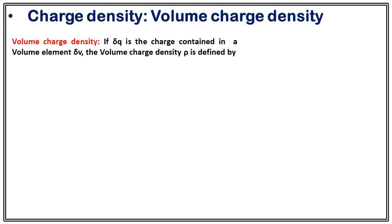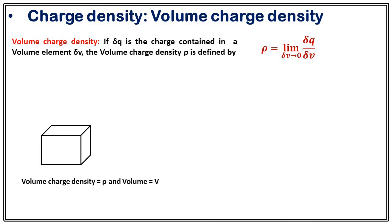Now consider the third case: volume charge distribution. If δq is the charge contained in a volume element δv, then the volume charge density ρ is defined as ρ = lim(δv→0) δq/δv. The charge on a small volume element dv is ρ dv. If the body has total volume v, the total charge is ∫ ρ dv, obtained by dividing the volume into tiny elements dv and integrating ρ dv over the whole volume.